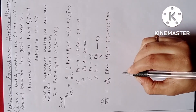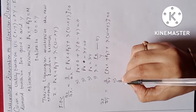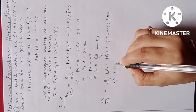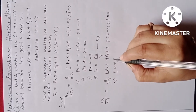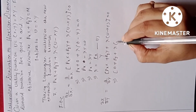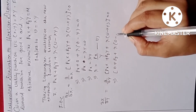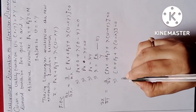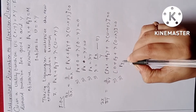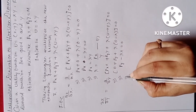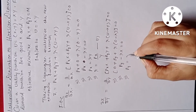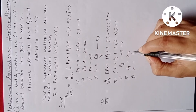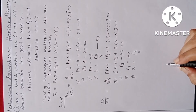Taking the partial derivative with respect to Y, we get PY minus Lambda·X equal to 0, so PY equal to Lambda·X and Lambda equal to PY divided by X. This is equation two.